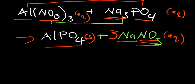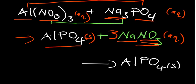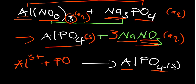What is going to be the net ionic equation of this reaction? In the net ionic equation, we show the precipitate as the product — which is aluminium phosphate in solid state. What reacted to give us that? It's aluminium (Al³⁺) reacting with phosphate (PO₄³⁻). All these are in aqueous states. That is the net ionic equation in this case.